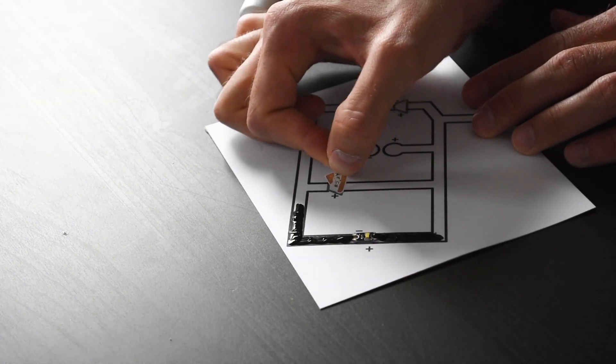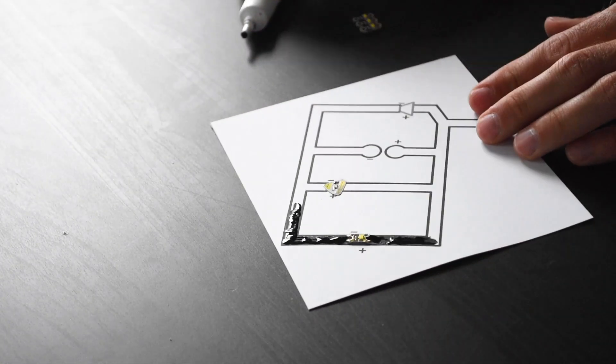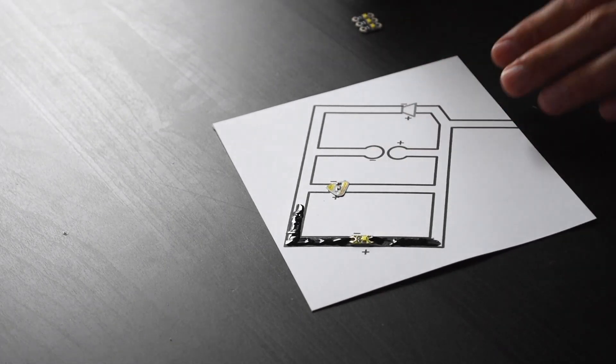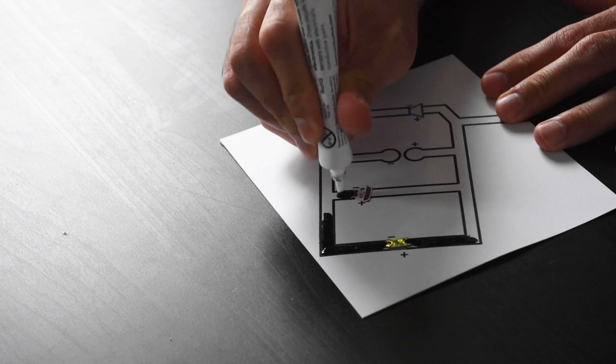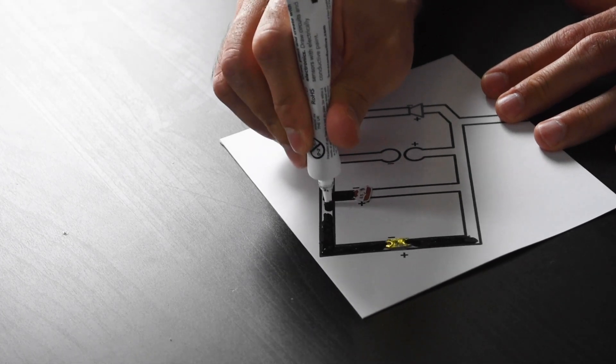We're going to take the blue one. Plus side goes here and the minus side goes that way. Great. Like I said, it's adhesive so it's already stuck onto the paper, which is very nice and very easy. Then coat solder it to the paint and continue.